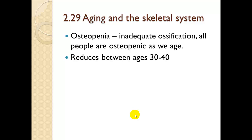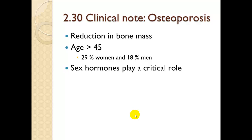Aging and the skeletal system: osteopenia is inadequate ossification — all people become osteopenic as we age, with bone mass reduction beginning between ages 30 and 40. Clinical note on osteoporosis: reduction of bone mass in those over 45 affects about 29% of women and 18% of men. Sex hormones — estrogen and testosterone — play a critical role in maintaining strong bones.